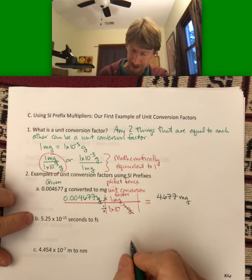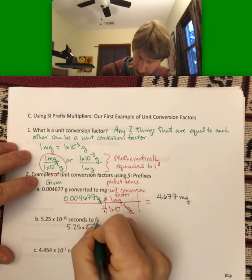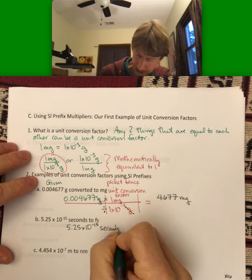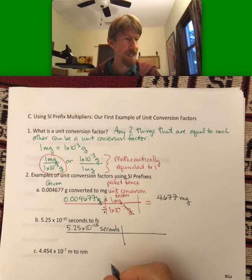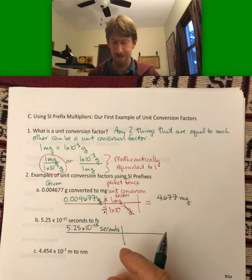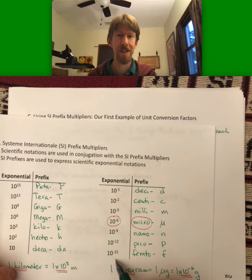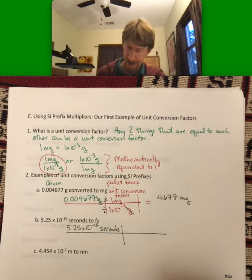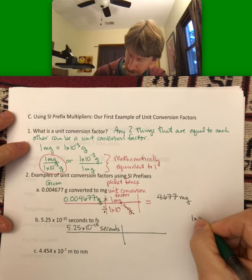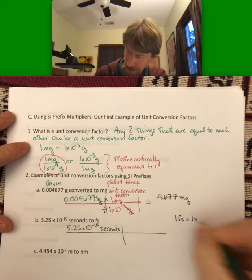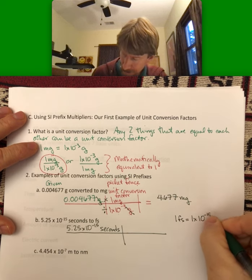That's our first one. Let's do at least one more of these. This is going to be seconds to femtoseconds. I've got 5.25 times 10 to the minus 15 seconds. I know this is femtoseconds because I've got my f, and my f is femto, and femto means 10 to the minus 15. My unit conversion factor for this is going to be one femtosecond equals 1 times 10 to the minus 15 seconds.